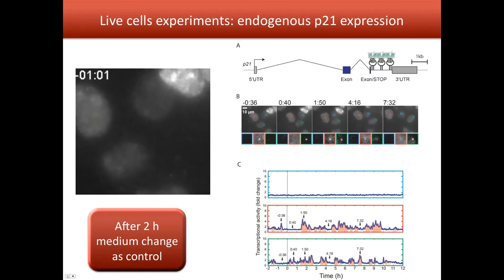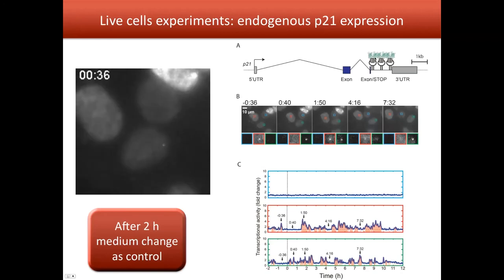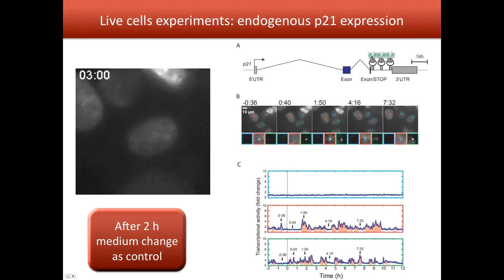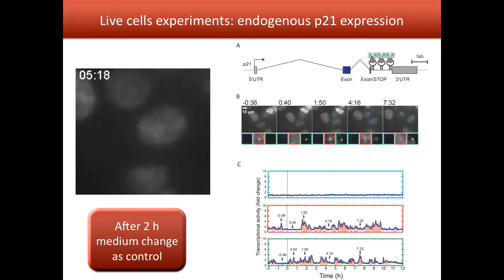The MS2 coat protein can tightly bind to the MS2 stem loops. By using 24 MS2 repeats, and because the MS2 coat protein is fused to GFP, you accumulate up to 48 GFP proteins on each mRNA. It then becomes possible to detect the mRNA either in the cytoplasm or, more interestingly, at the transcription site.